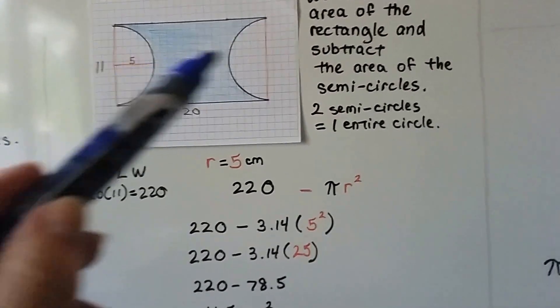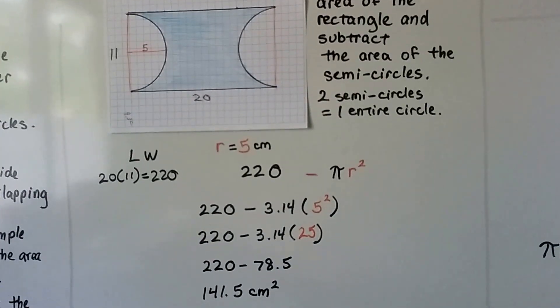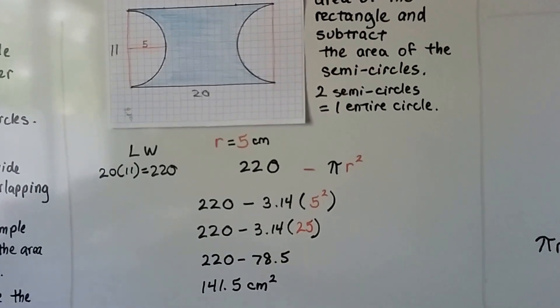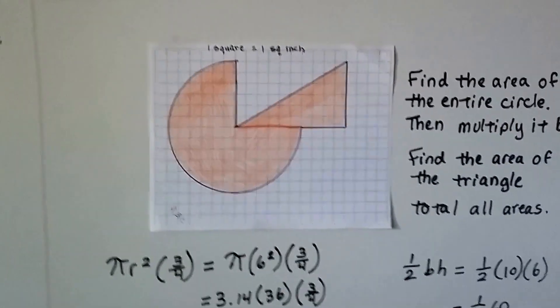That's the area of the blue section. We just started with the big rectangle and subtracted the area of a circle. Now let's take a look at this one.